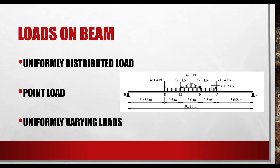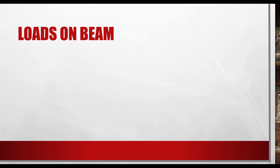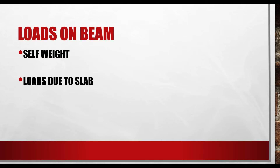Let's look at how we can have uniformly distributed, point, or uniformly varying loads in buildings. Loads on beams in buildings come in about four forms. The first is the self weight of the beam itself, calculated from the construction material — for a concrete beam, you multiply the density of concrete by the cross-sectional area of the beam. Loads can also come from slabs and from the roof.